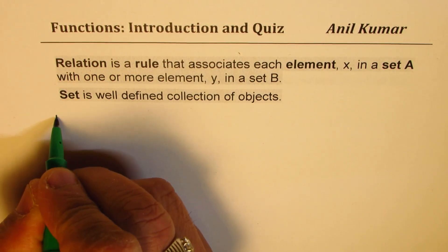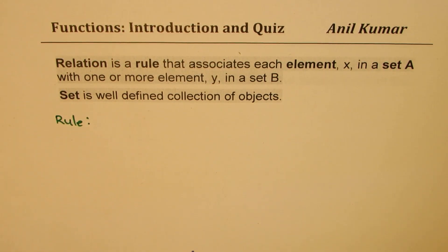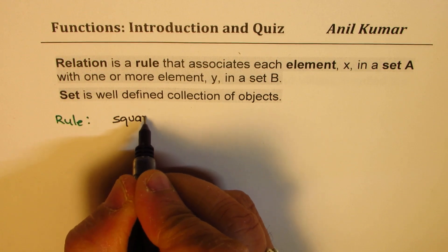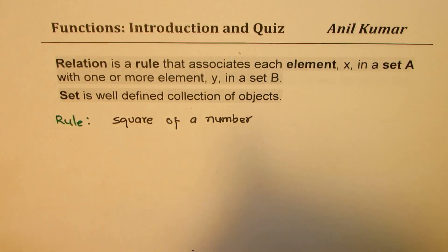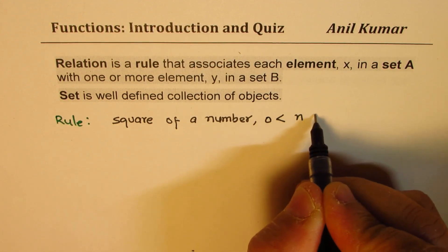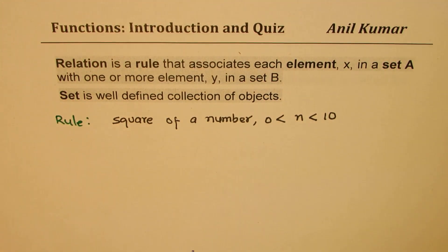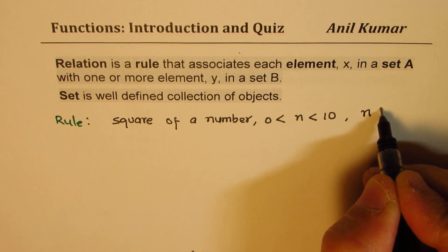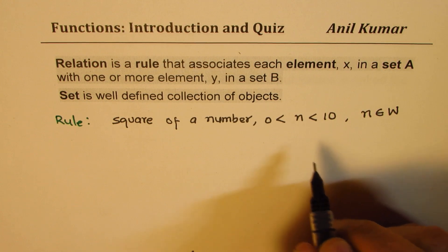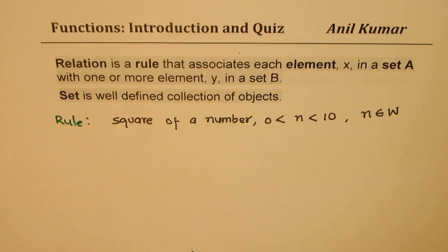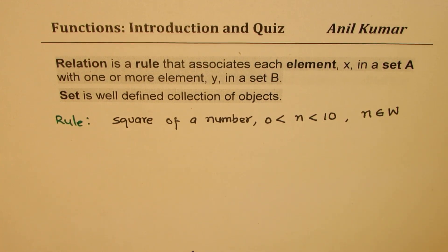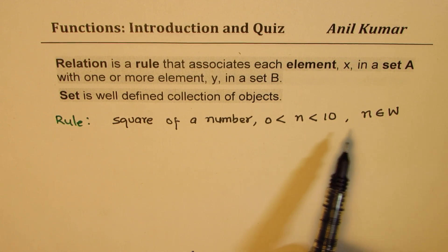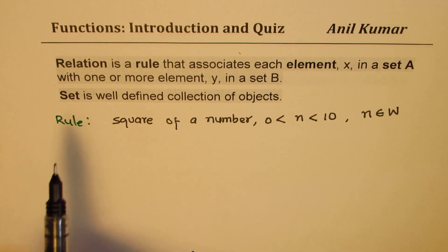A function is a rule, and a rule can take many forms. For example, a rule could say 'square of a number.' We could be specific: square of a number where n is greater than 0 and less than 10, and n belongs to whole numbers — so we're only considering natural numbers less than 10, not fractions or real numbers in between.